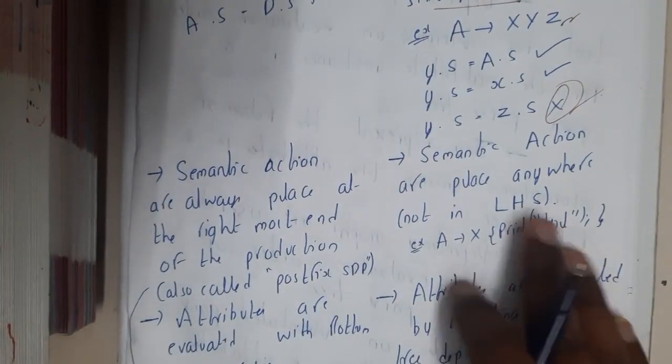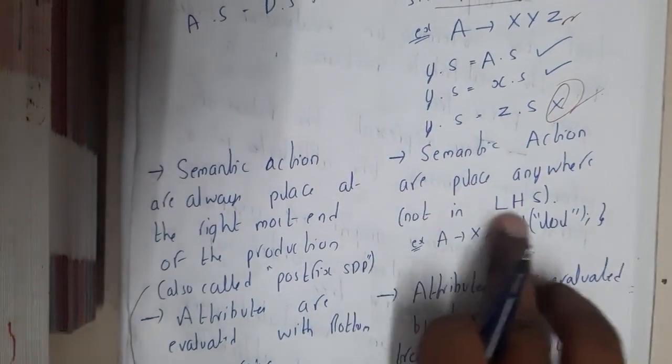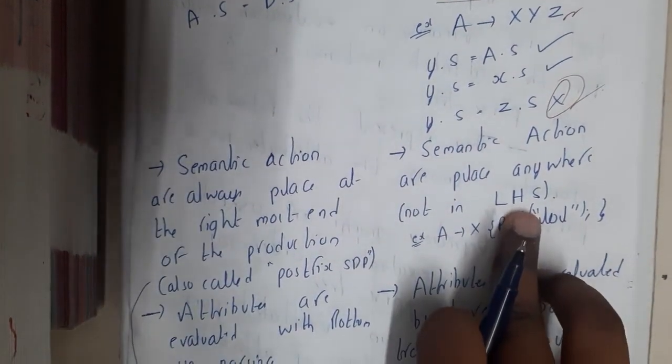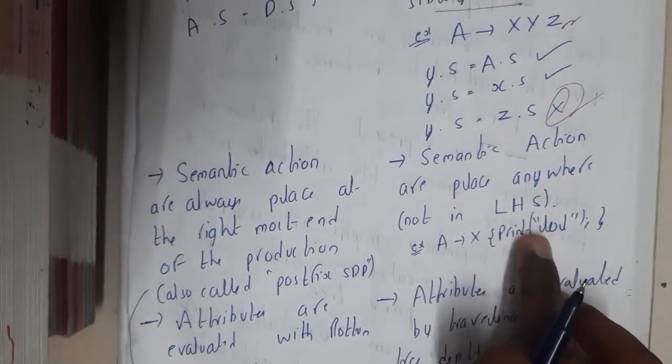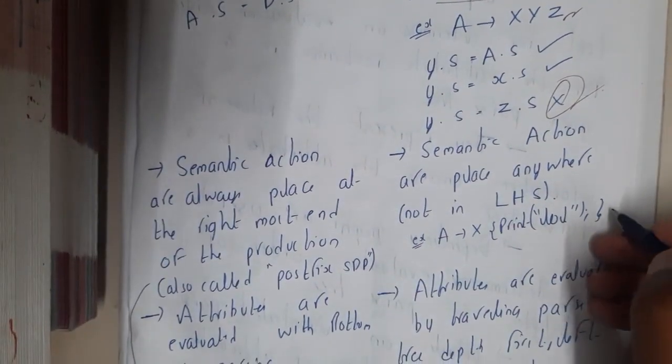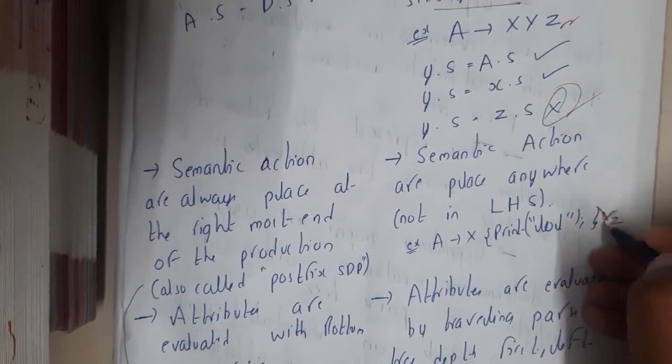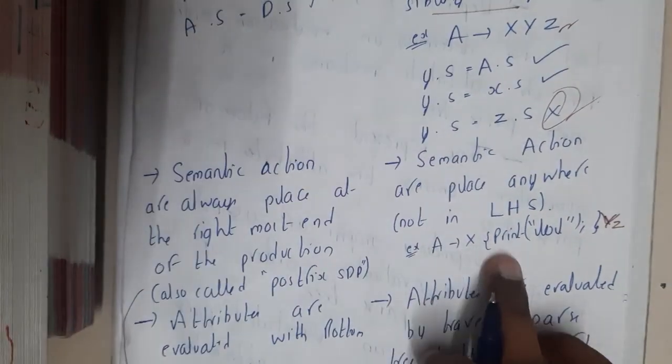L-attributed, semantic actions are placed anywhere on the RHS, not on LHS. So you cannot place it in left-hand side, but on RHS you can place it anywhere. So A implies X print something XYZ, in that way.